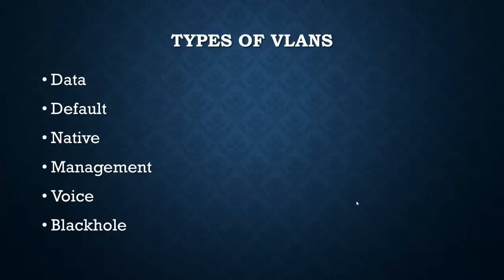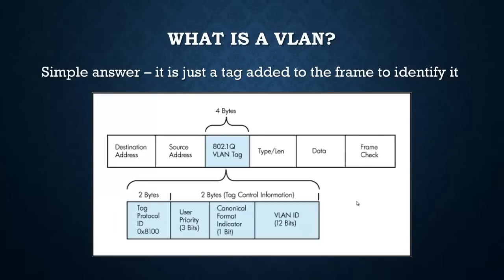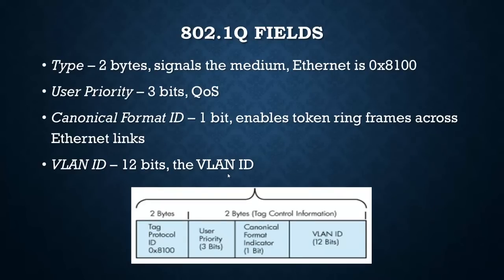Make sure you know what these different VLANs do and how to set them up, because they will be on the exam. A VLAN is a small 4-byte tag added to frames as they come into the switch. The fields include: protocol ID - what protocol am I using, such as Ethernet; quality of service; a field for older legacy formats like token ring; and the VLAN ID, which is a 12-bit field. That's the tag that gets placed on the frame.